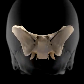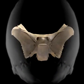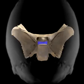The body of the sphenoid features a depression known as the sella turcica, which houses the pituitary gland.